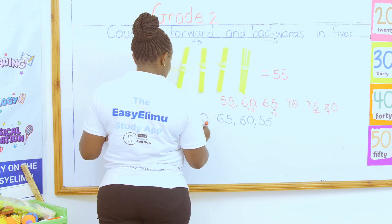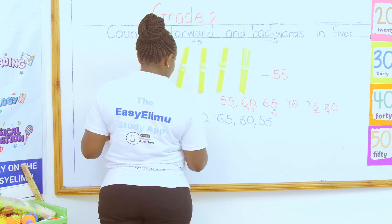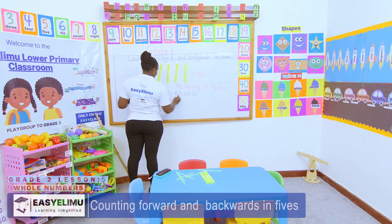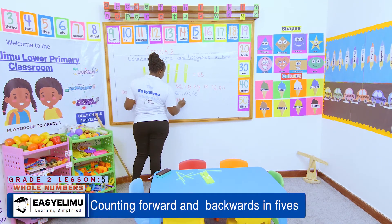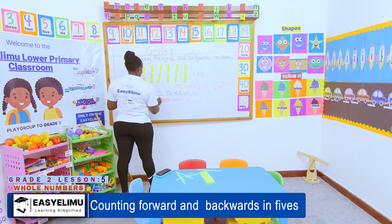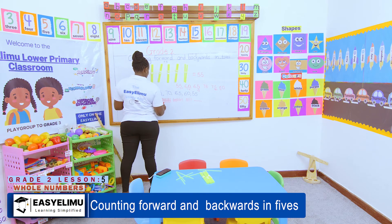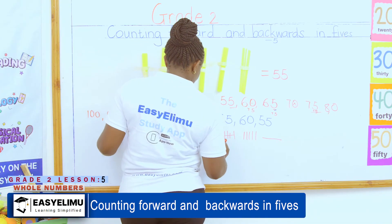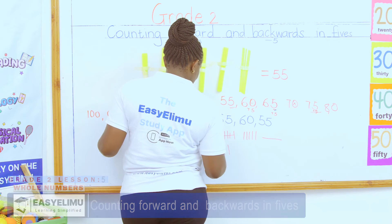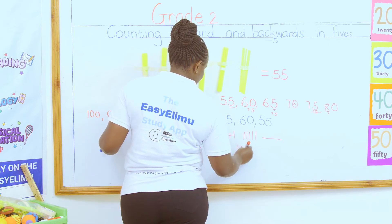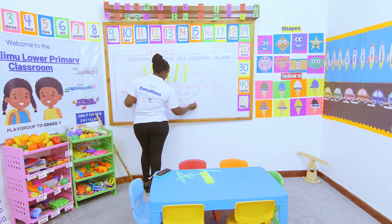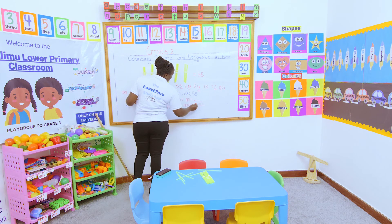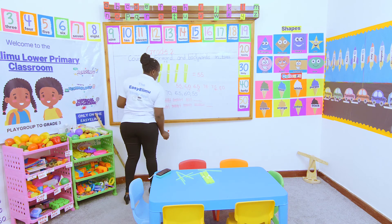Count the bundles: 1, 2, 3, 4, 5, 6, 7, 8, 9, 10 — that's one group of ten. Then another group: 1 through 10. Then another group: 1 through 10. Then another: 1 through 10. Then another: 1 through 10. Then another: 1 through 10. Then one more group: 1 through 10. How many are there altogether?